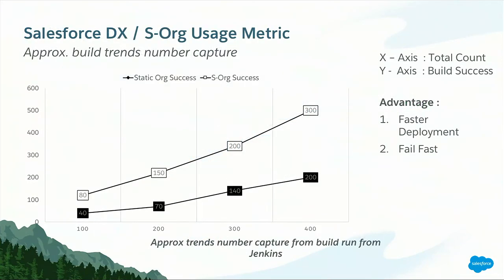Let's get into the usage metrics of Salesforce DX versus static org success rate. On the y-axis you see successful builds, and on the x-axis the total number of builds. The black boxes represent static org success, and the white boxes represent Salesforce DX orgs. During our initial implementation of just 100 builds, Salesforce DX gave double the success rate compared to static orgs. As we implemented this across all stacks, the success rate for Salesforce DX drastically improved. This is a great benefit in faster deployments and fewer failures for developers.